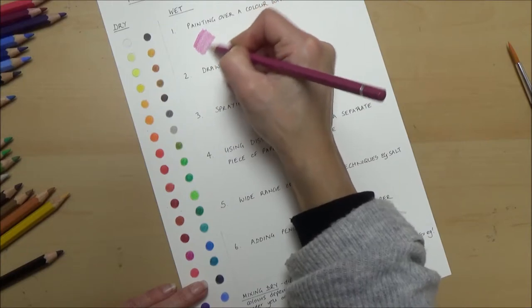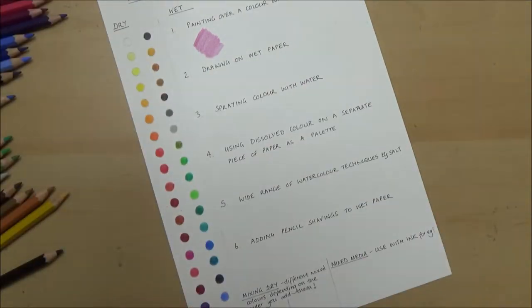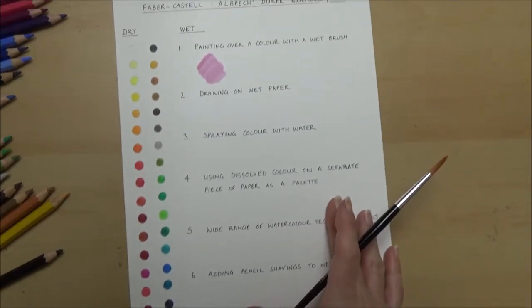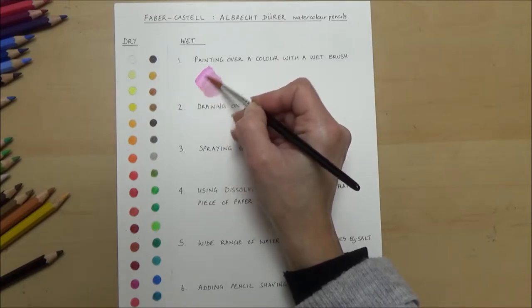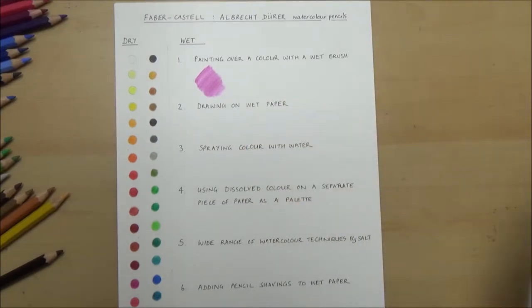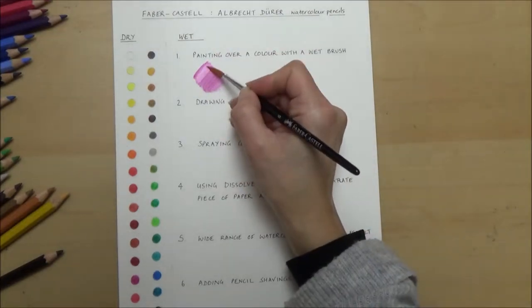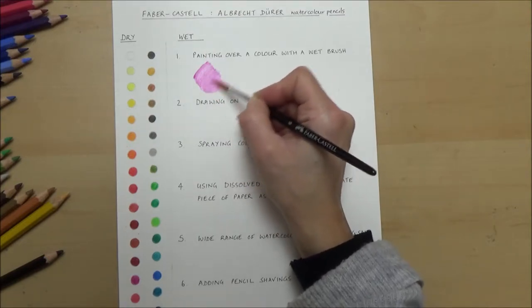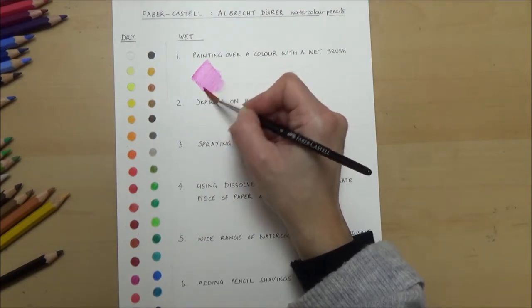Going into the wet techniques then, the first technique I'm going to try is painting over a color with a wet brush. Now this is the main way I suppose everyone would use them. I'm just picking out colors that would look quite bright on camera. I'm not going to try all of them but rest assured that they do all behave evenly. They all react really well with water, they dissolve super well and the colors that you get are so vibrant it's really impressive. As you can see I've just added some water there and that color is really vibrant and intense.